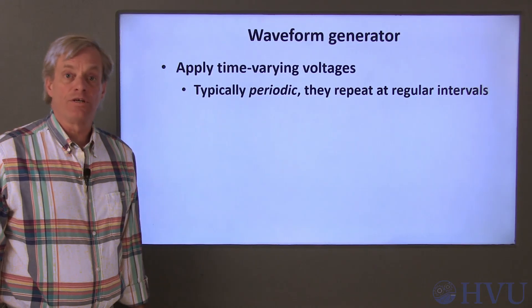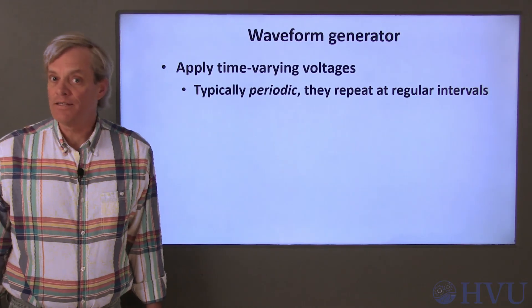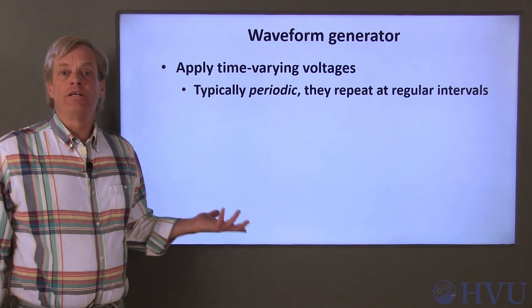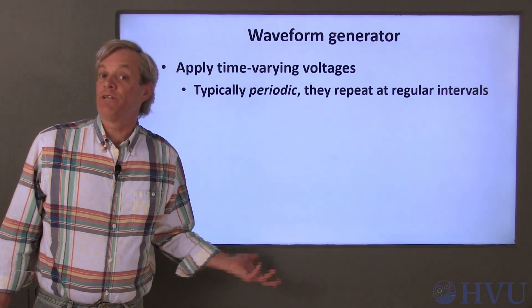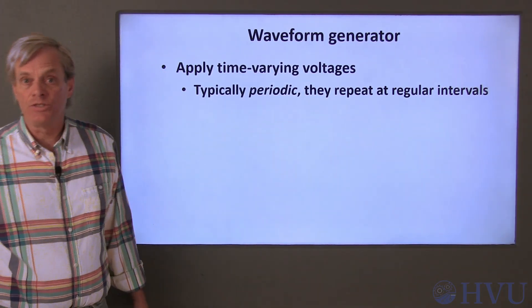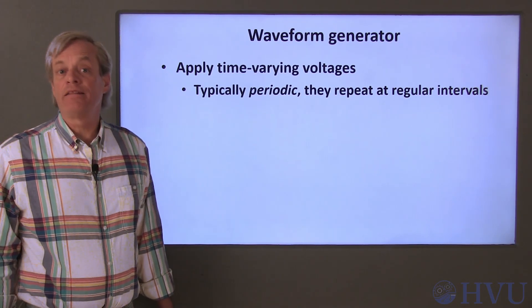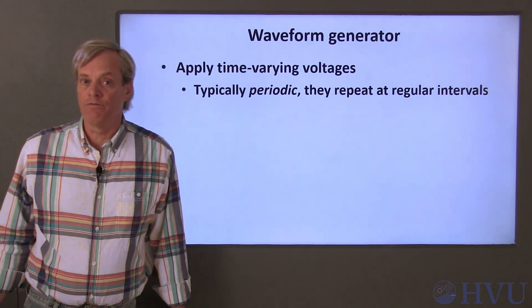This instrument is typically used to provide time-varying voltages to a circuit. Voltages and currents in a circuit are categorized as being either constant or time-varying. The arbitrary waveform generator can be used to apply a wide range of time-varying or constant voltages to our circuits. For the most part, the voltages provided will be periodic, meaning that they repeat themselves at regular intervals.